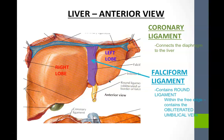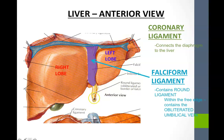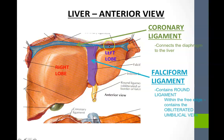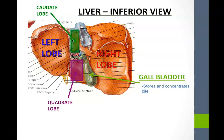Two important ligaments of the liver: the falciform ligament is found between the right and left lobes and attaches the liver to the anterior abdominal wall. Within the free inferior edge of the falciform ligament, we find the round ligament, which contains an obliterated umbilical vein — your lifeline as a fetus. The coronary ligament, outlined on the superior aspect of the liver, attaches the liver to the diaphragm; coronary means crown, so it's like a crown on top.